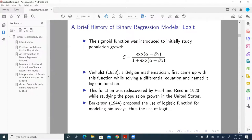Berkson in 1944 proposed the use of logistic function for modeling bioassays, thus the use of logit. So a little bit behind probit. But logit stands out as probably the most popular form of binary regression models.